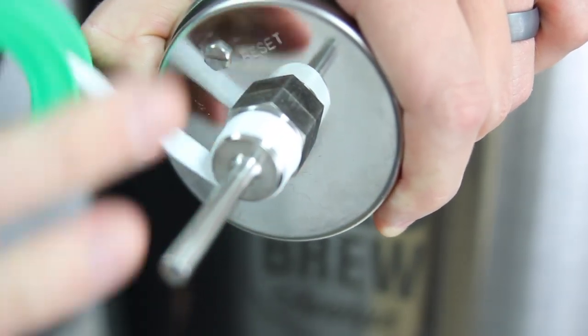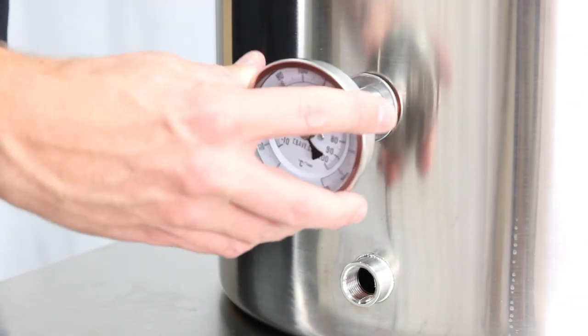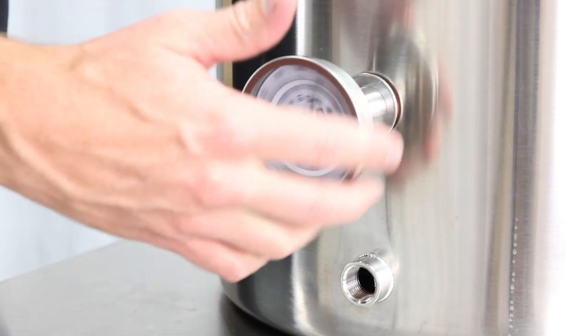Next, wrap your thermometer threading a few times with the Teflon tape provided. Screw into the bulkhead fitting and hand tighten only.